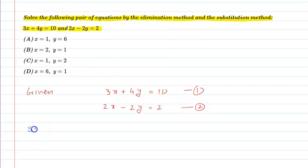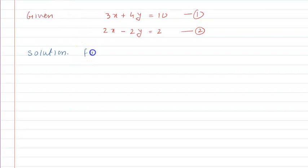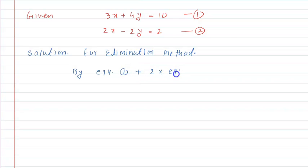Let us see the solution part of this question. We have to solve both equations by the elimination method and substitution method. For the elimination method, we will multiply equation number 2 by 2 so that the coefficient of y becomes equal and opposite, and then we will eliminate y by addition. So we apply: equation 1 plus 2 times equation 2.